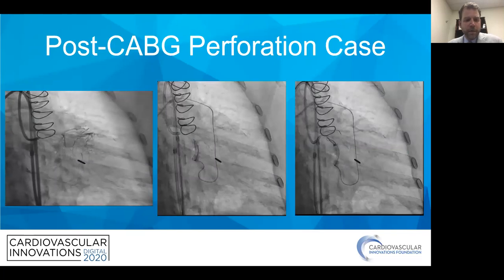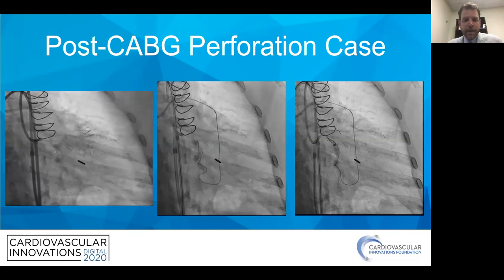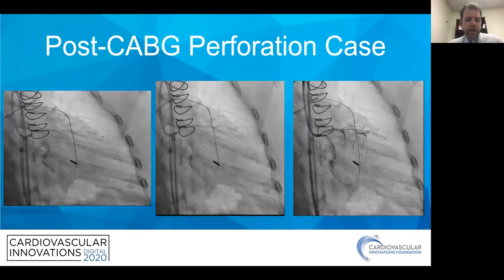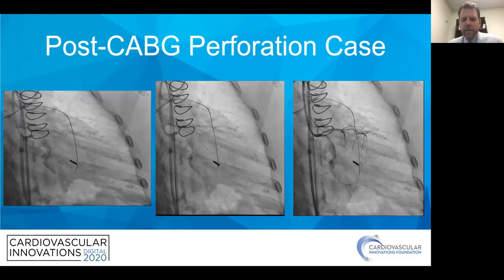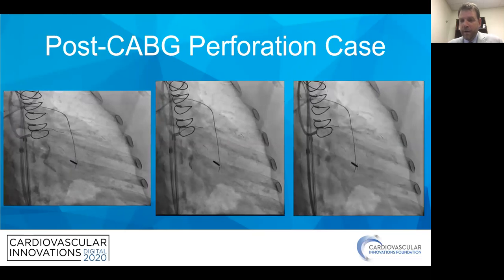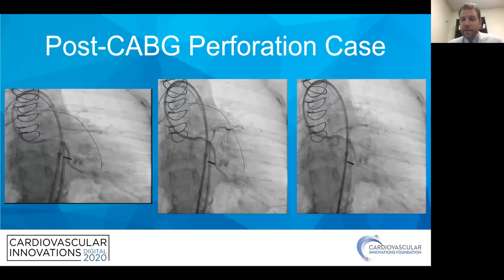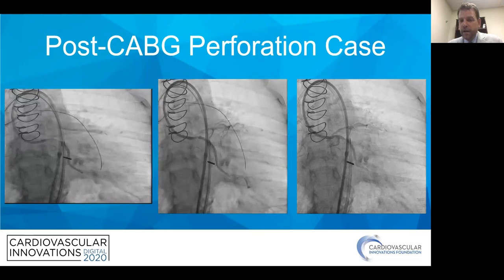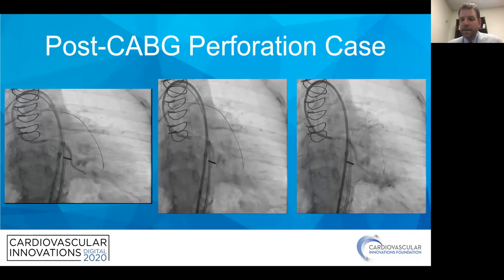Here is an example of a post-CABG perforation during a CTO I was doing. You can see a left dominant system, with a degenerating vein graft up top. I set up for a reverse CART, externalized the wire, and noticed a little pinch right there — a circumflex post-CABG situation. I was having trouble getting a microcatheter anterograde and tried to balloon it open, but even a small balloon resulted in a perforation. Because I had an externalized wire, I quickly got additional balloons, modified, and placed a stent. Thankfully, we treated this with just a drug-eluting stent and got a really good angiographic result.